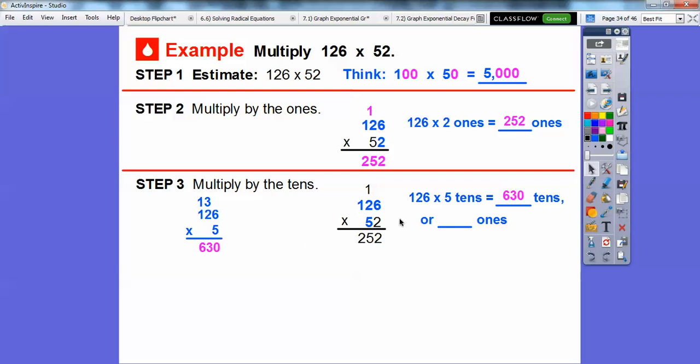5 times 1 is 5, plus 1 is 6. So this is 630 tens. So how many ones is 630 tens? Well, it's 63 with an additional 0 right there. So 6,300 ones. So that's what goes right underneath here. We need to line up the ones right there.